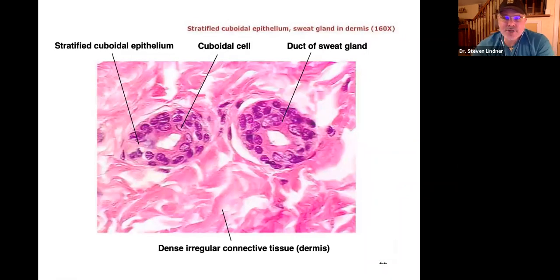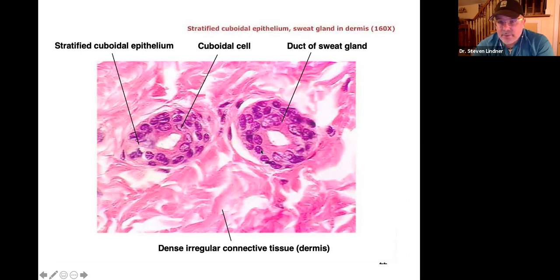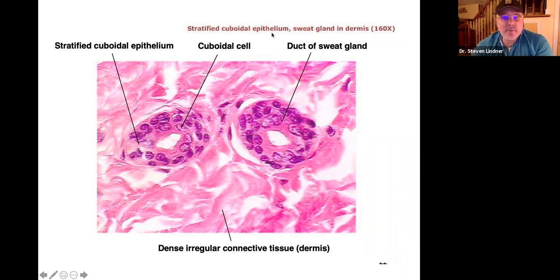Now shifting gears — here's a lumen, and another lumen. What surrounds them? They look like round cubes, but it's not one cell layer — this one looks like two to three layers thick. So we're going to call that stratified cuboidal epithelium.